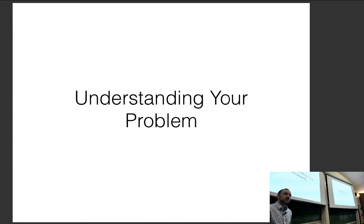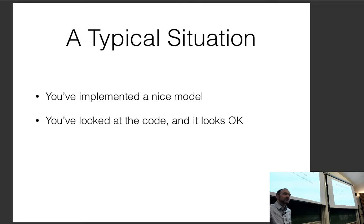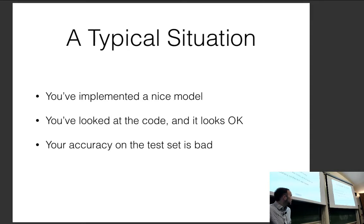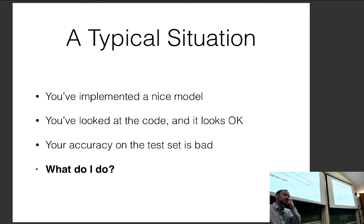The first key to debugging is understanding what problem you're facing. The worst possible way is when you've implemented a nice model, looked at the code, it looks okay, you can't find any glaring bugs, and then your accuracy on the test set is bad. Do you randomly change lines of code until your test accuracy goes up? There are more efficient ways to figure out what kind of problem you're facing, and that's what I'm going to talk about in this class.